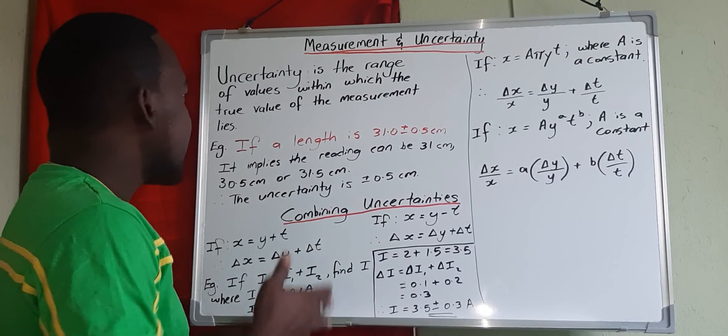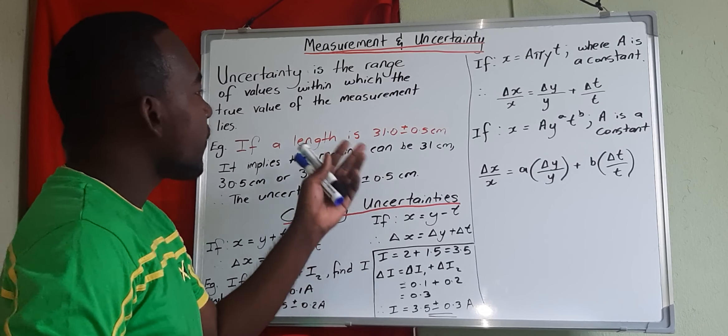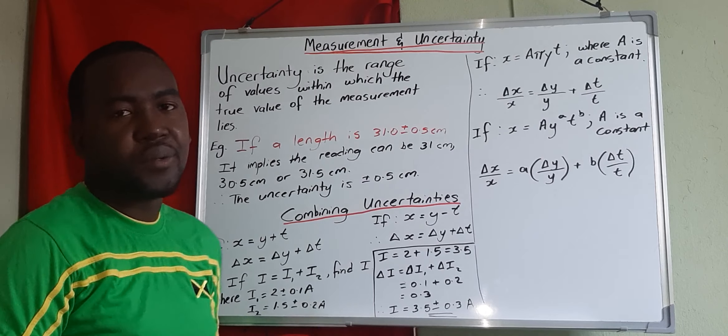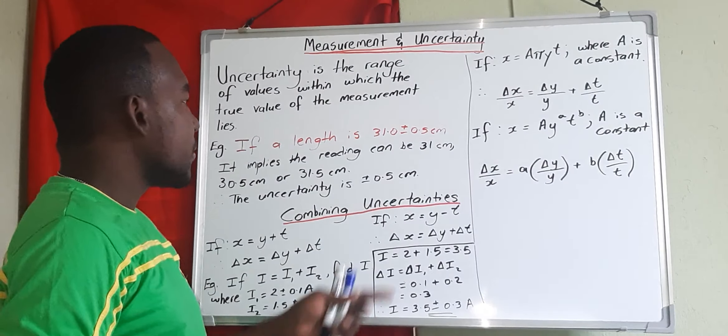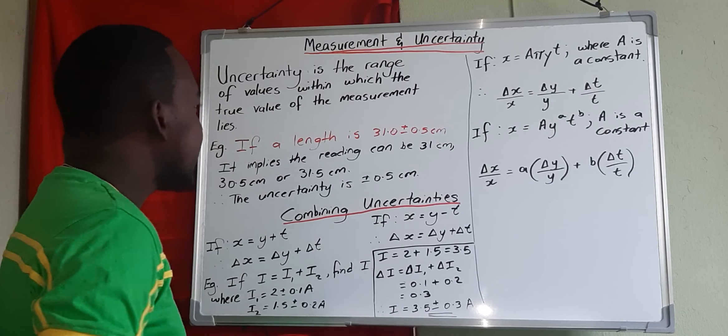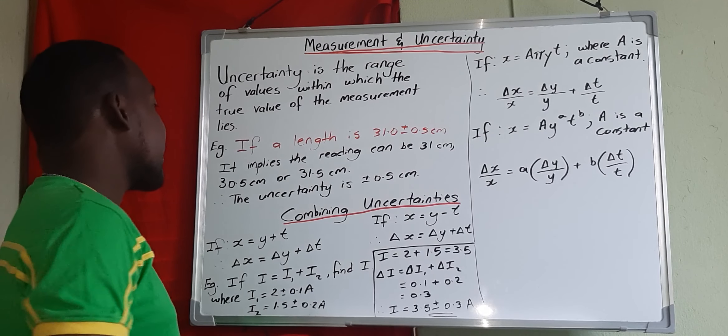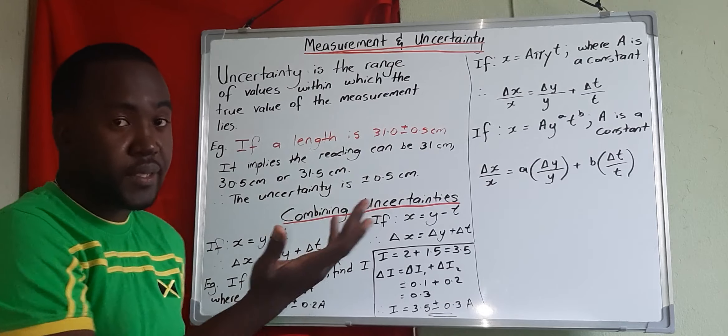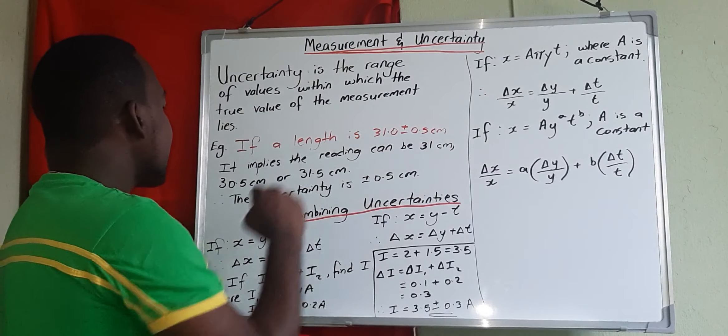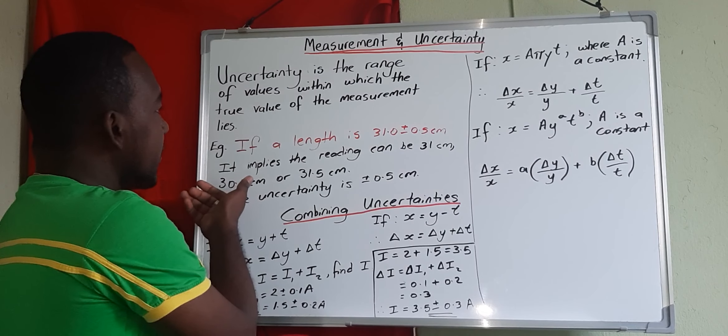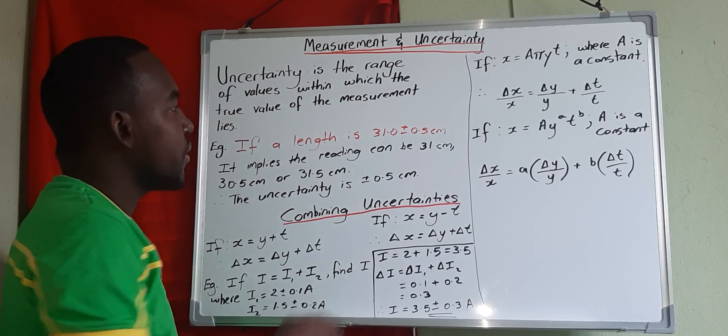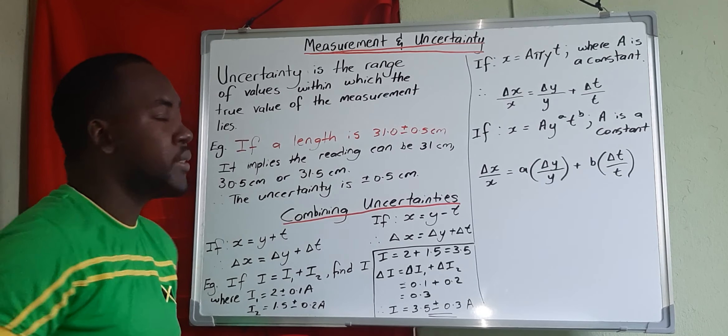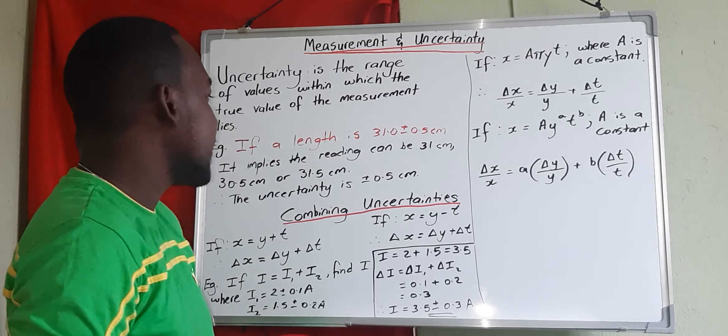For example, a length was measured using a ruler and we got 31 plus or minus 0.5 centimeters. This value tells us that the true value can actually be 31 itself, or we can minus 0.5 to get 30.5, or we can add 0.5 to get 31.5 centimeters.